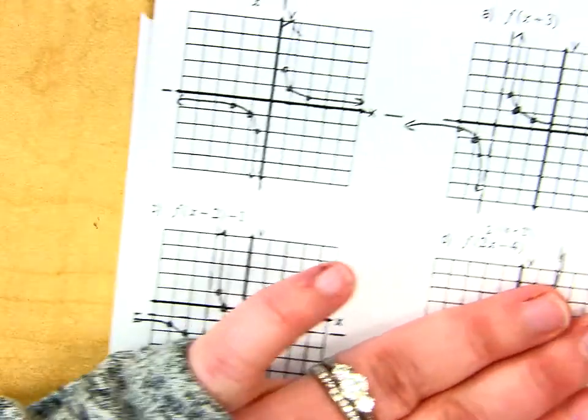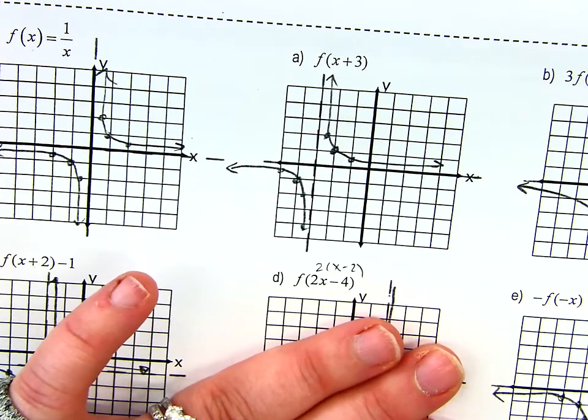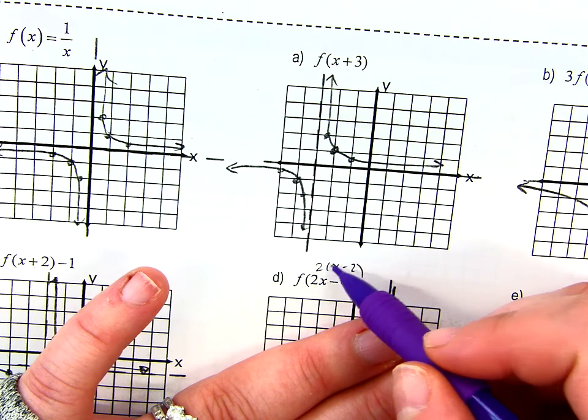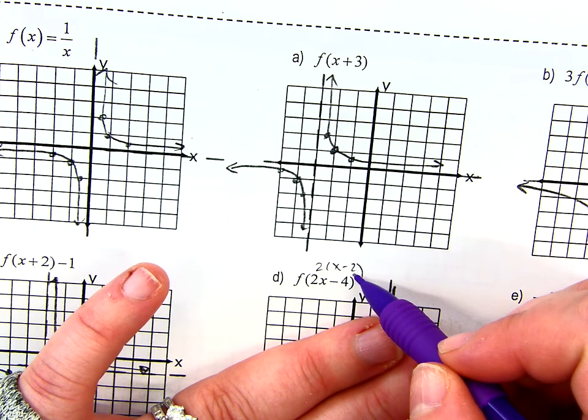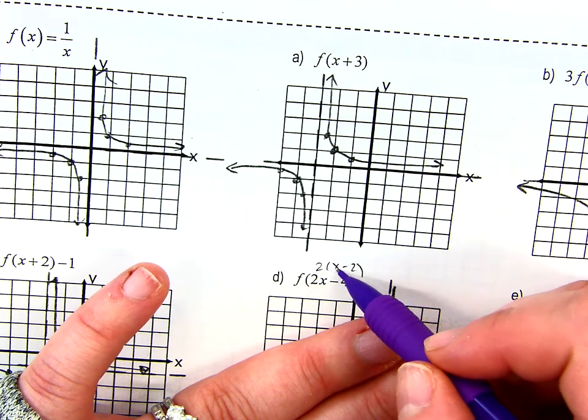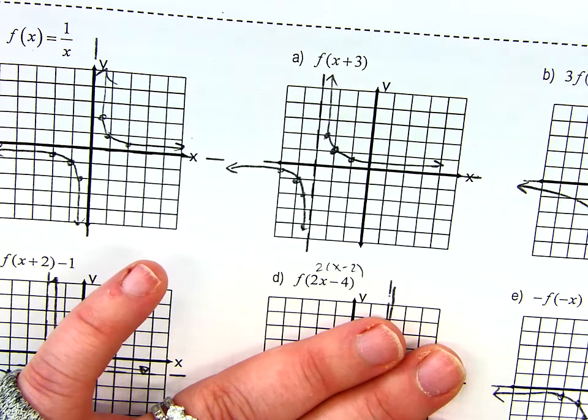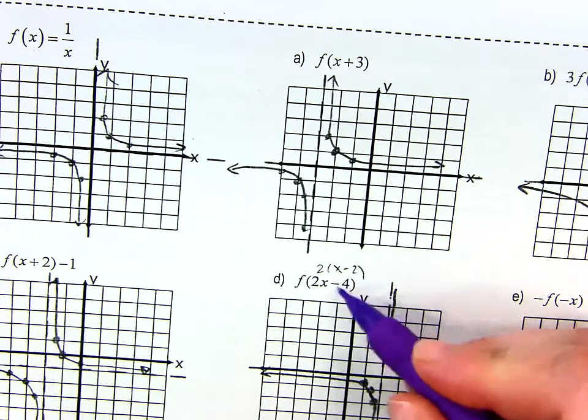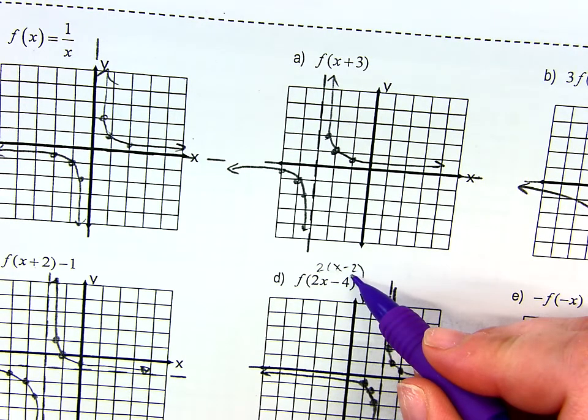D. We run into something similar that we had on the other side. I want to factor out that 2. So pull out that 2. And now I have 2x minus 2. So remember, if I'm multiplying the x, I'm going to condense as my accordion is going to shrink in. And then I'm also going to shift everything to the right 2 units.